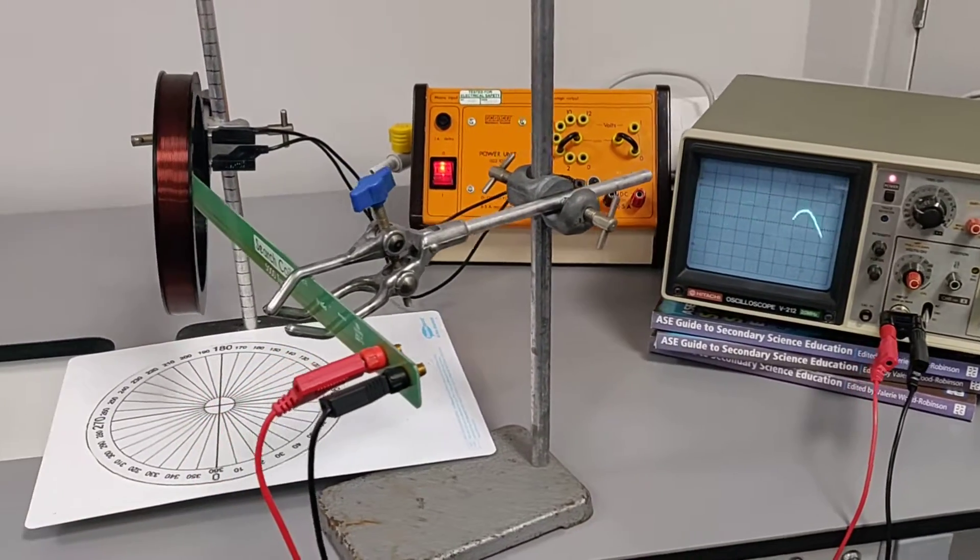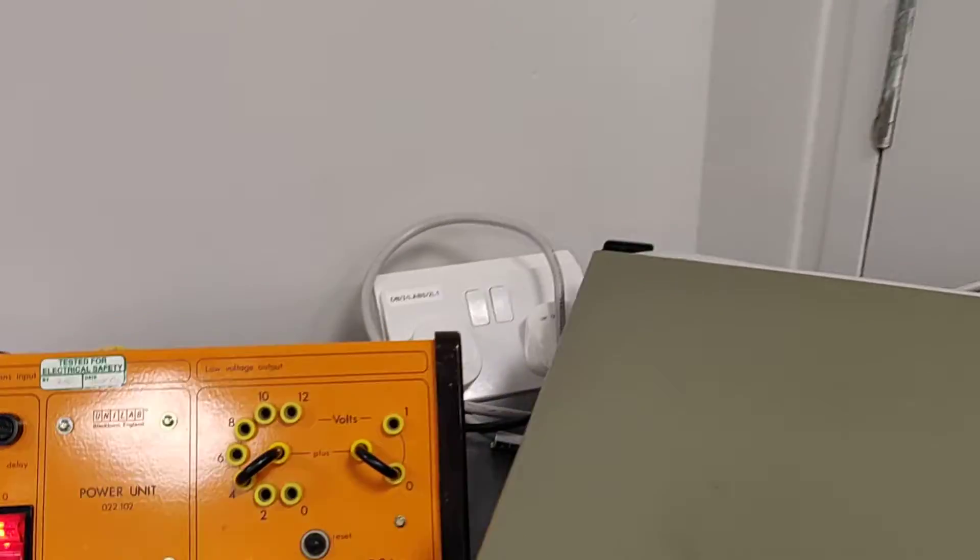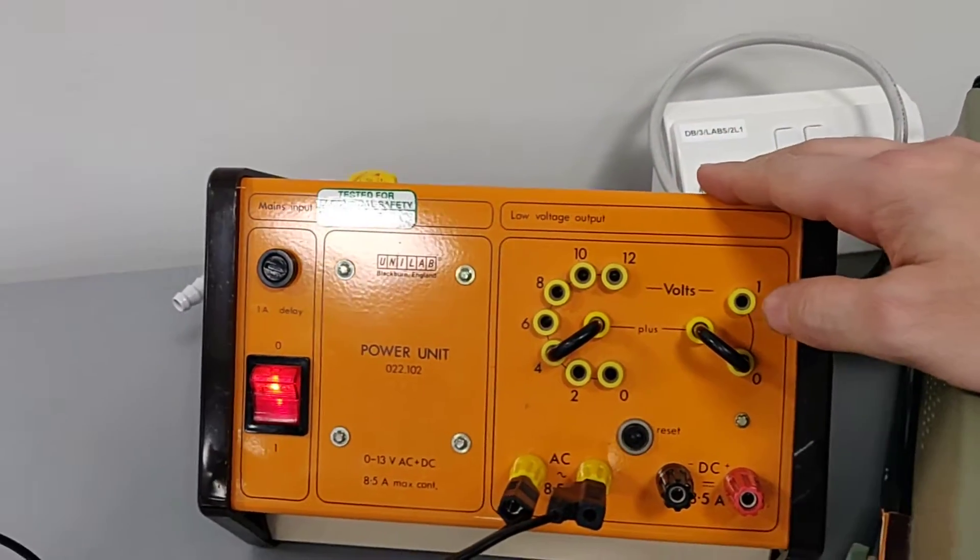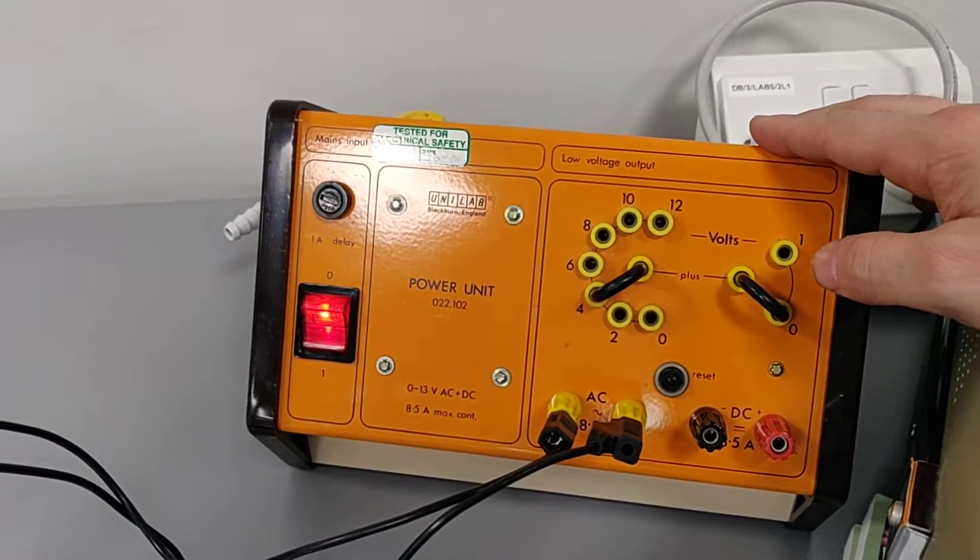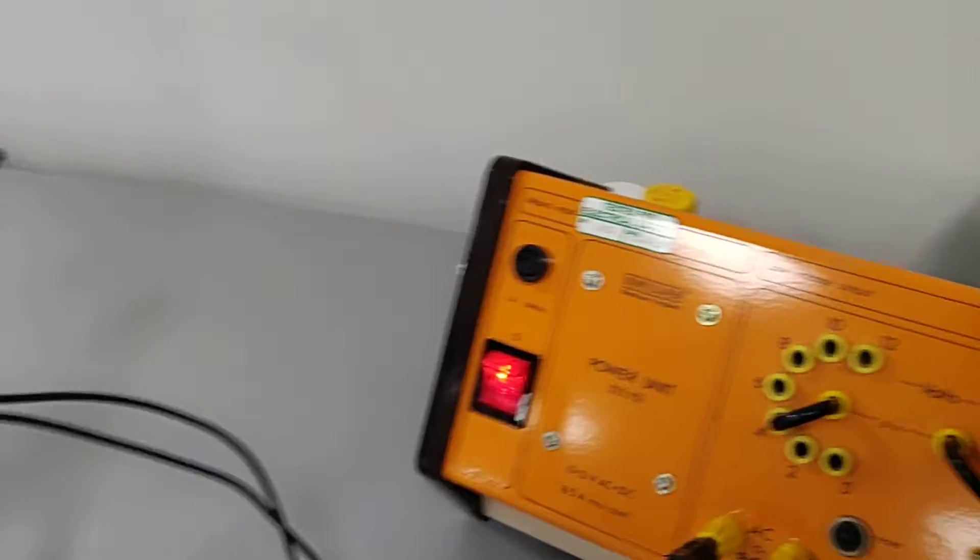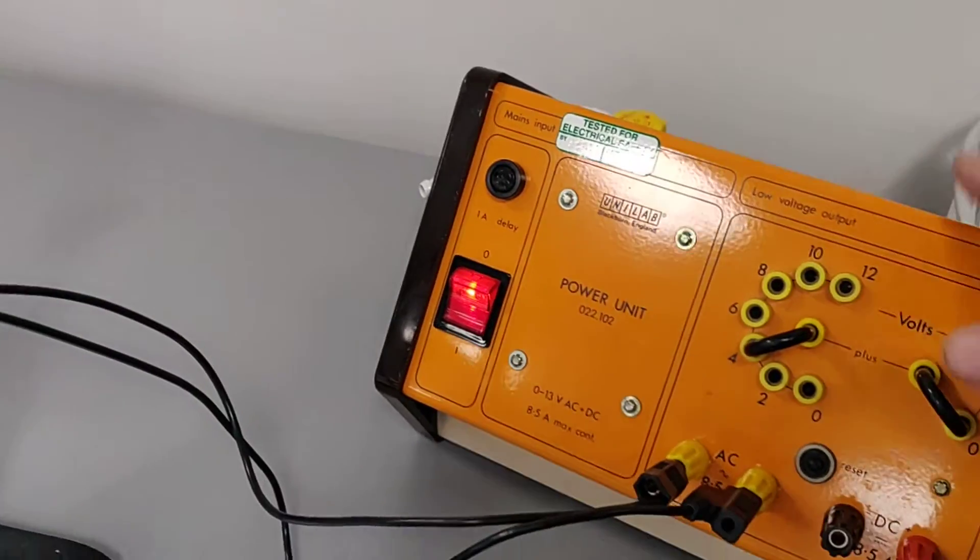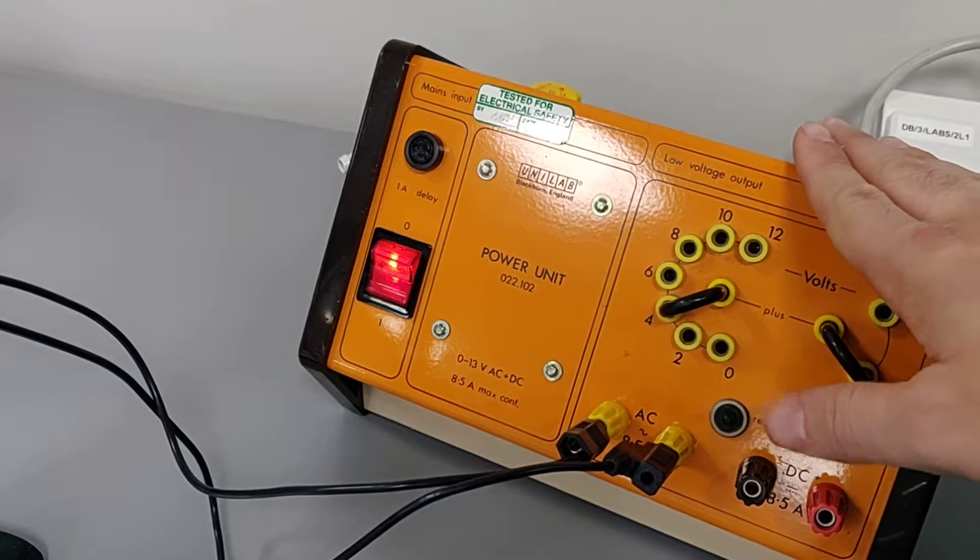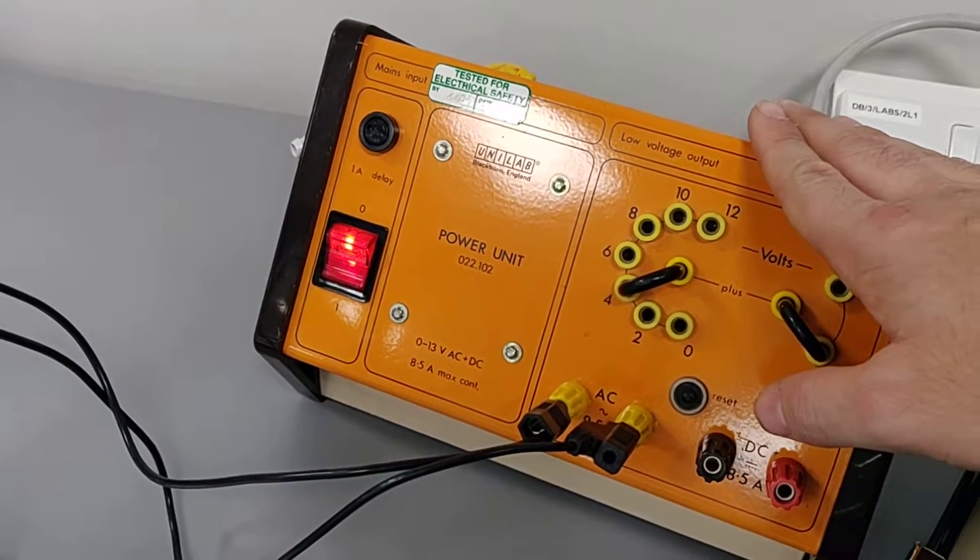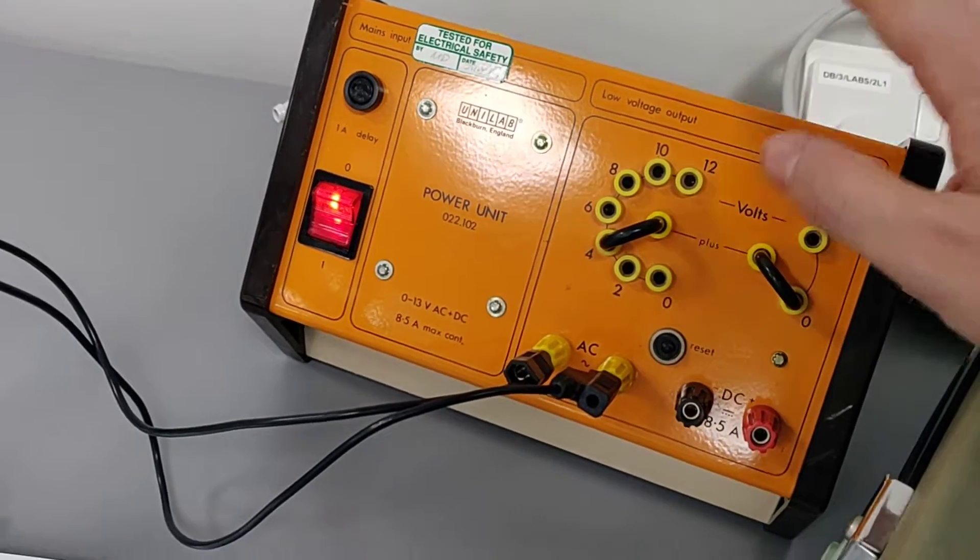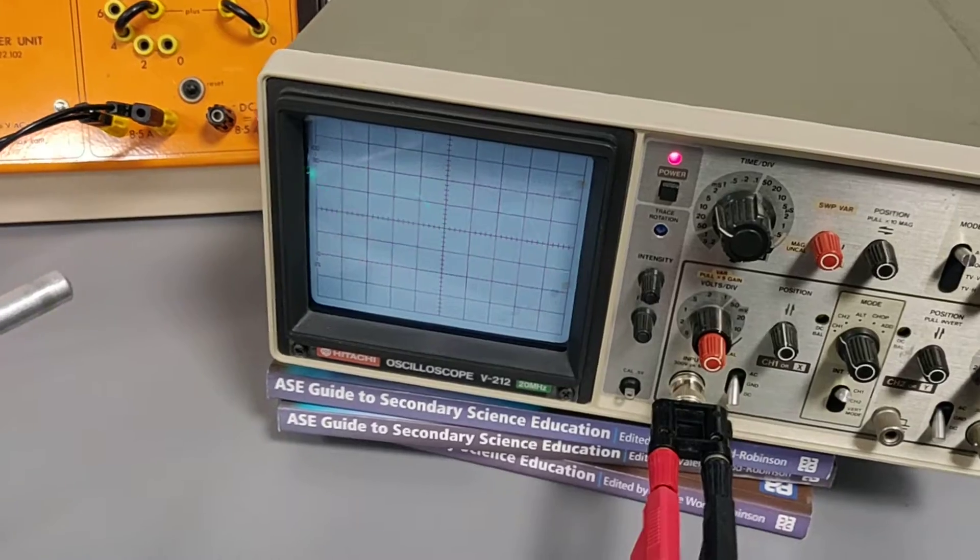If it doesn't work with the lab power pack or the setup that you've got, one thing you can try. This lab power pack, of course, will only output 50 hertz. If you want to increase the rate of change of magnetic flux in that coil there, you can just increase the frequency by replacing this power pack with a signal generator, where you can turn the frequency up much higher than 50 hertz. And that should enable you to obtain a signal.